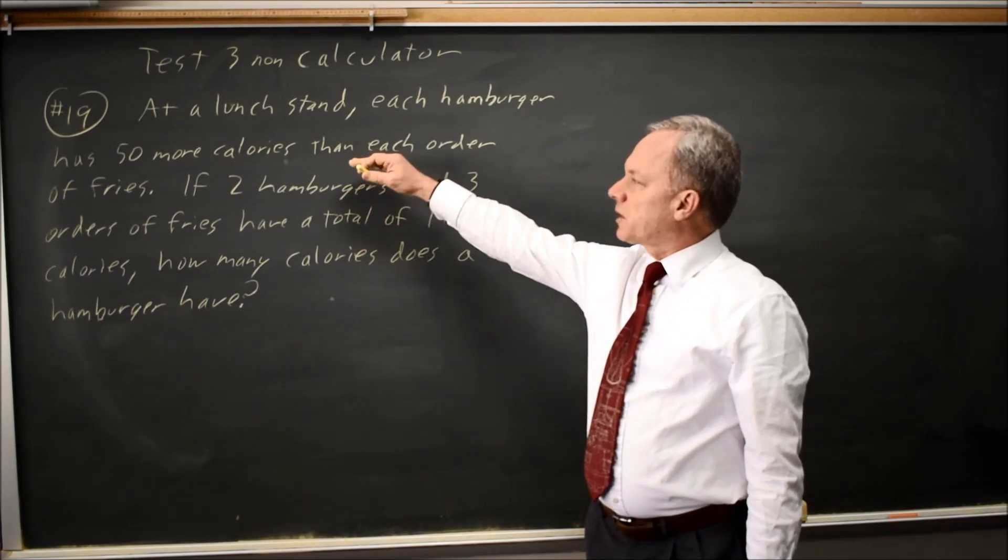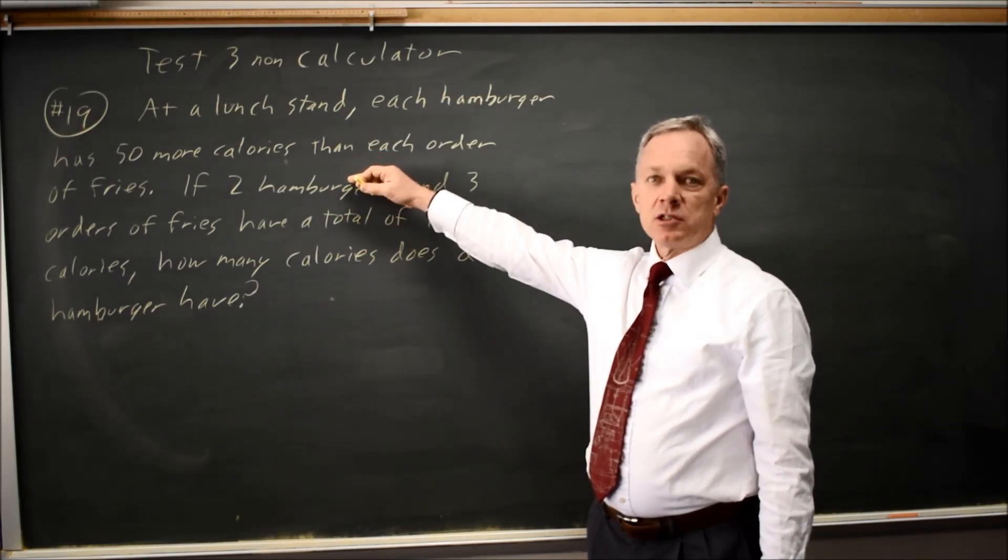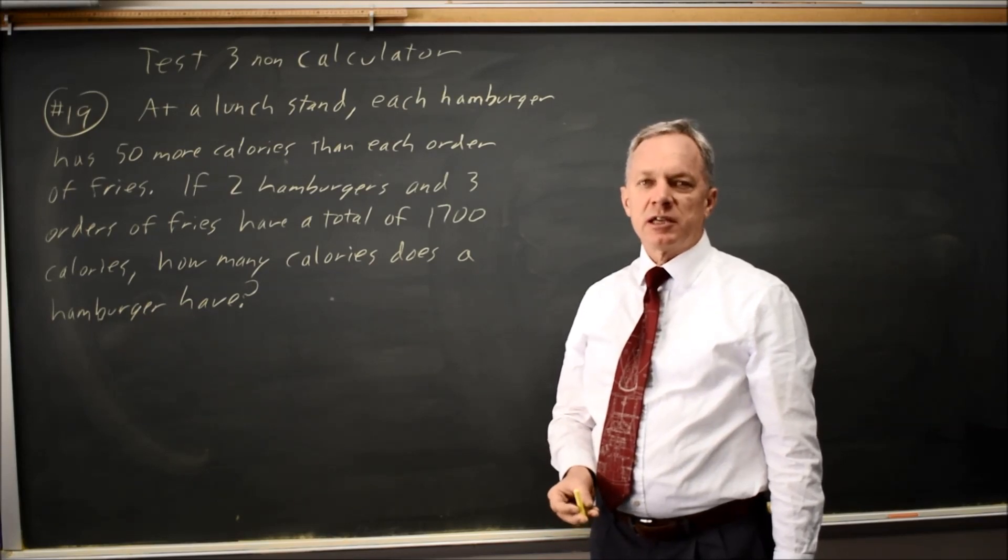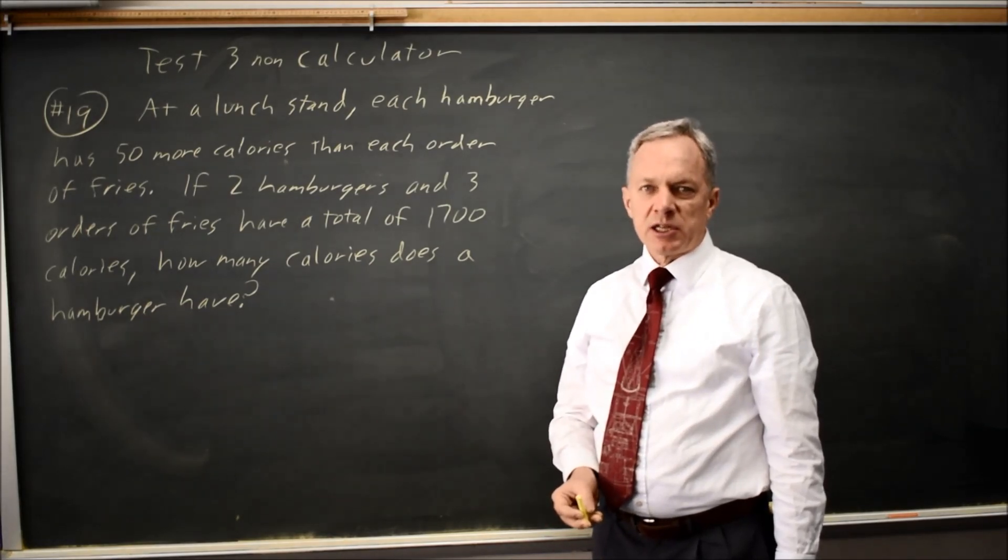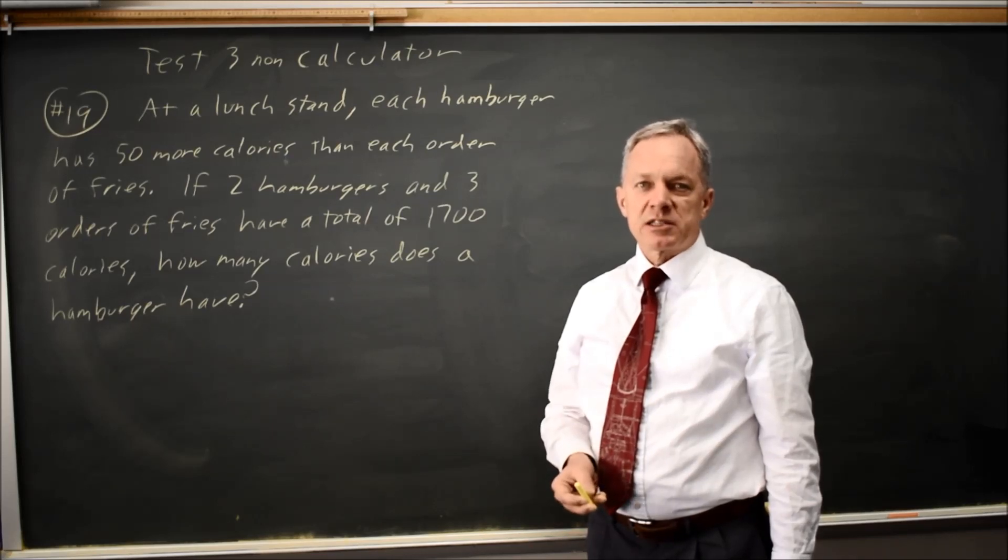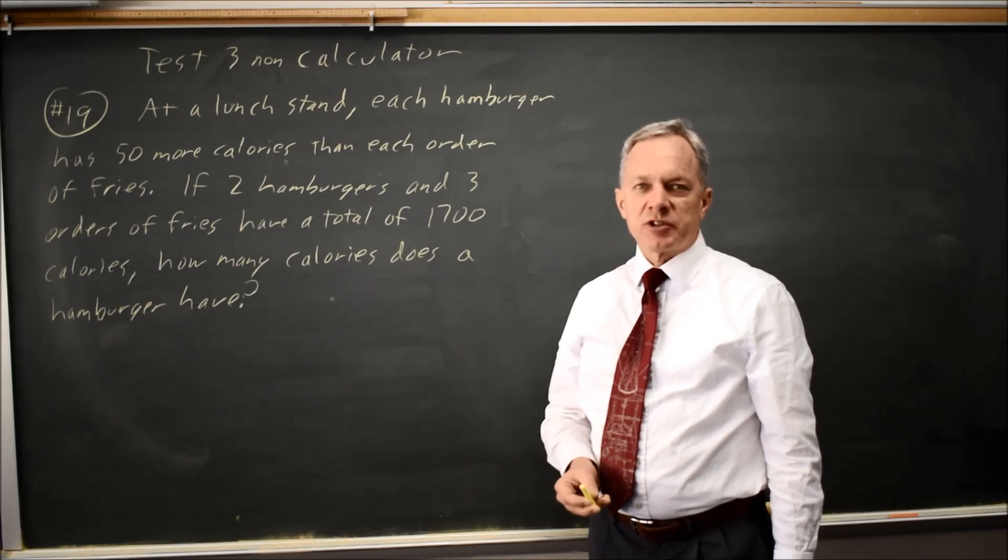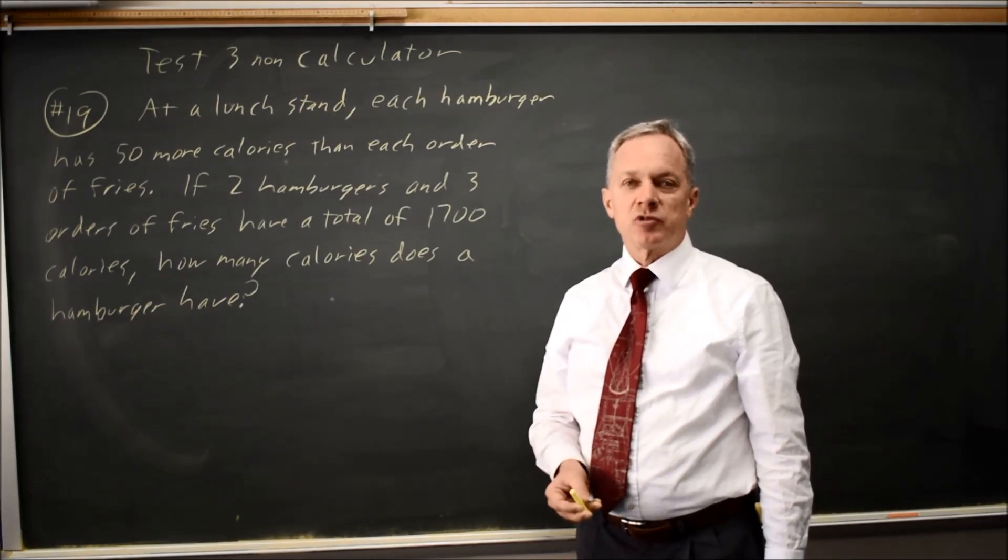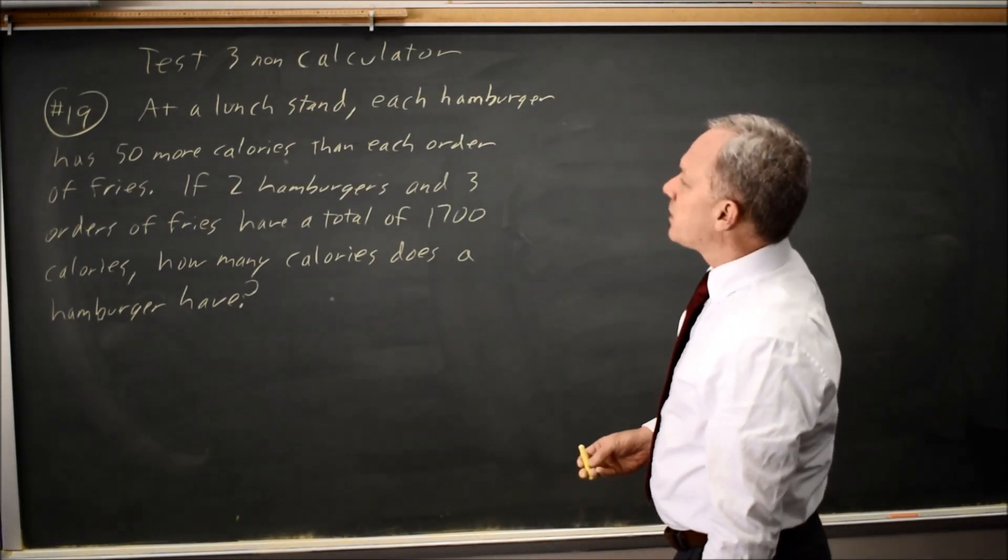College Board describes the calories in hamburgers and fries in two different ways. When you get two different statements relating the same two values, typically it's a system of equations word problem. College Board asks six system of equations problems during the course of your SAT, so you want to make sure you're very good at these and you can solve them in a variety of ways and that you can write the system from the word problem.